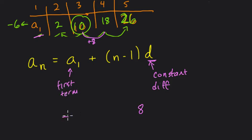So it's negative 6. Plus, what's this n minus 1 bit? So if n is 4, here the number 3 would go. Because what this bit is representing, n minus 1, is the number of jumps from the first term to get to the nth term.